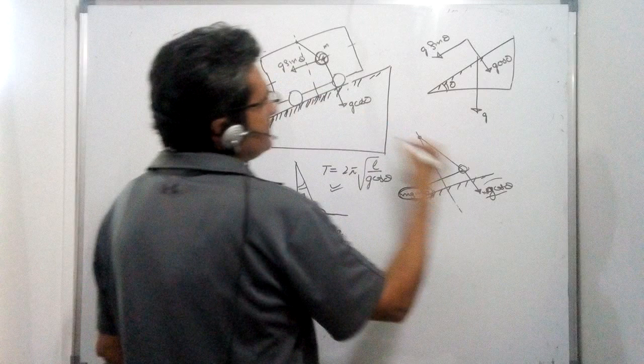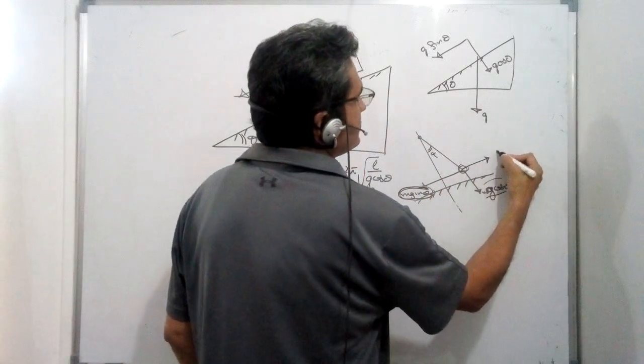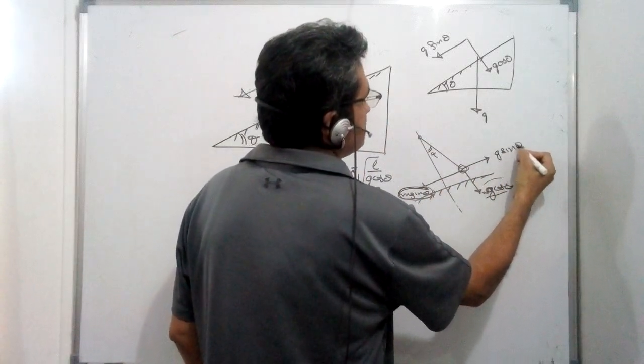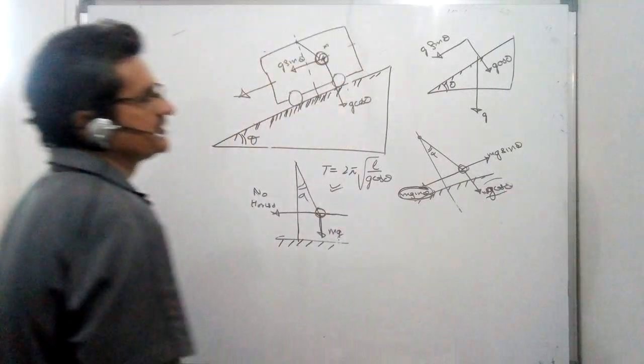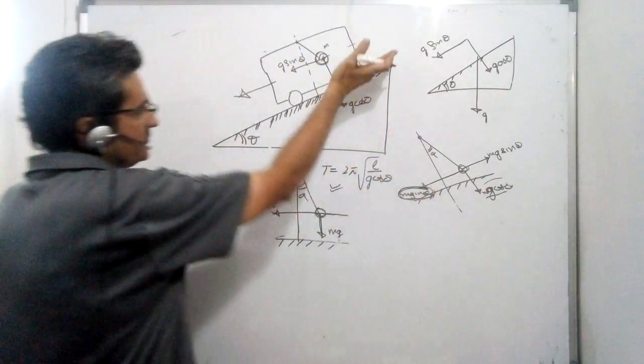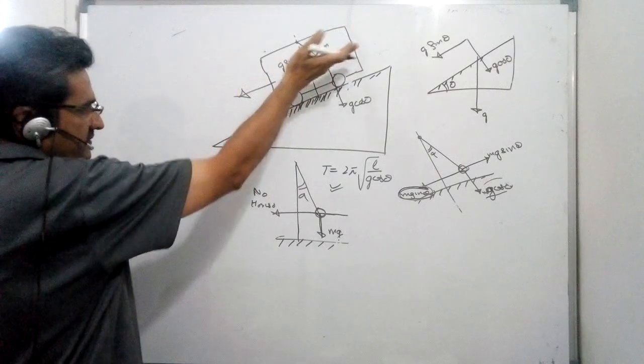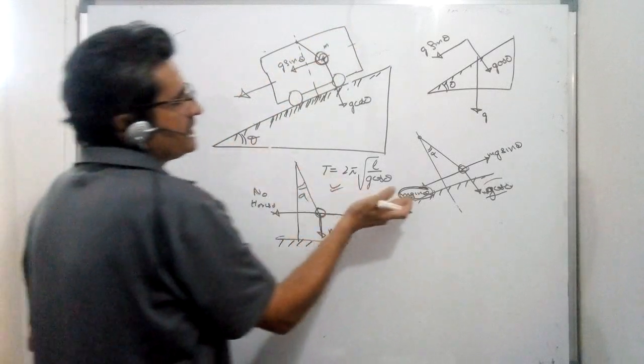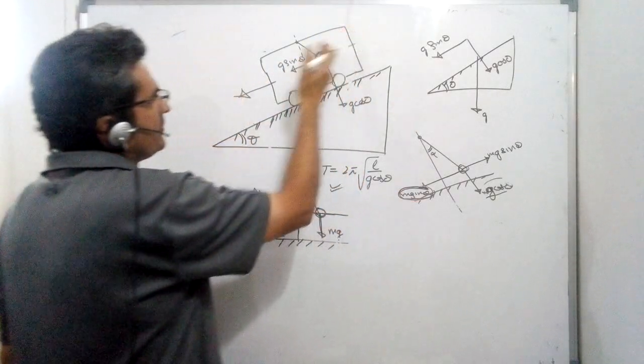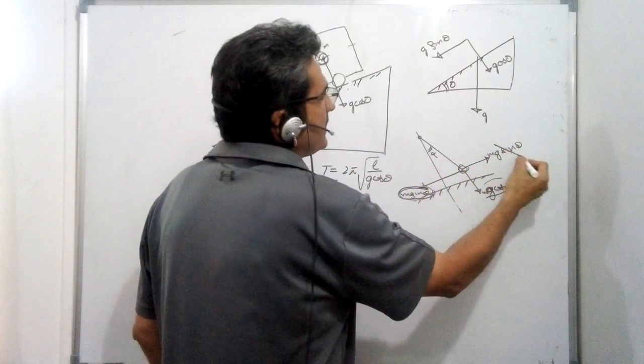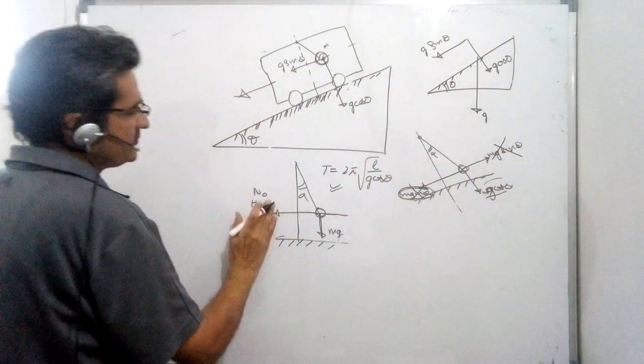These two forces—the gravity component along the inclined plane and the pseudo force—get cancelled because of the free fall. So here also you have a simple case of pendulum where instead of G you have G cos theta; everything remains the same.